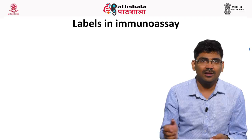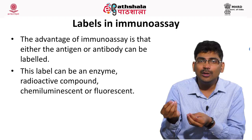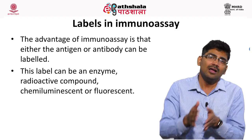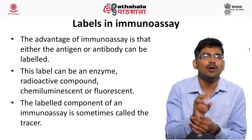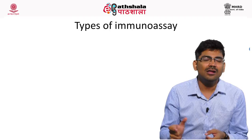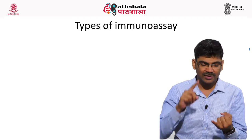Let us discuss the labels we use in immunoassay. A label can be an enzyme, a radioactive substance, a chemiluminescent substance, or a fluorometric substance. Either antigen or antibody can be labeled in immunoassay. The labeled component of immunoassay is also known as a tracer. Based on the type of label, immunoassay can be classified into the following types.